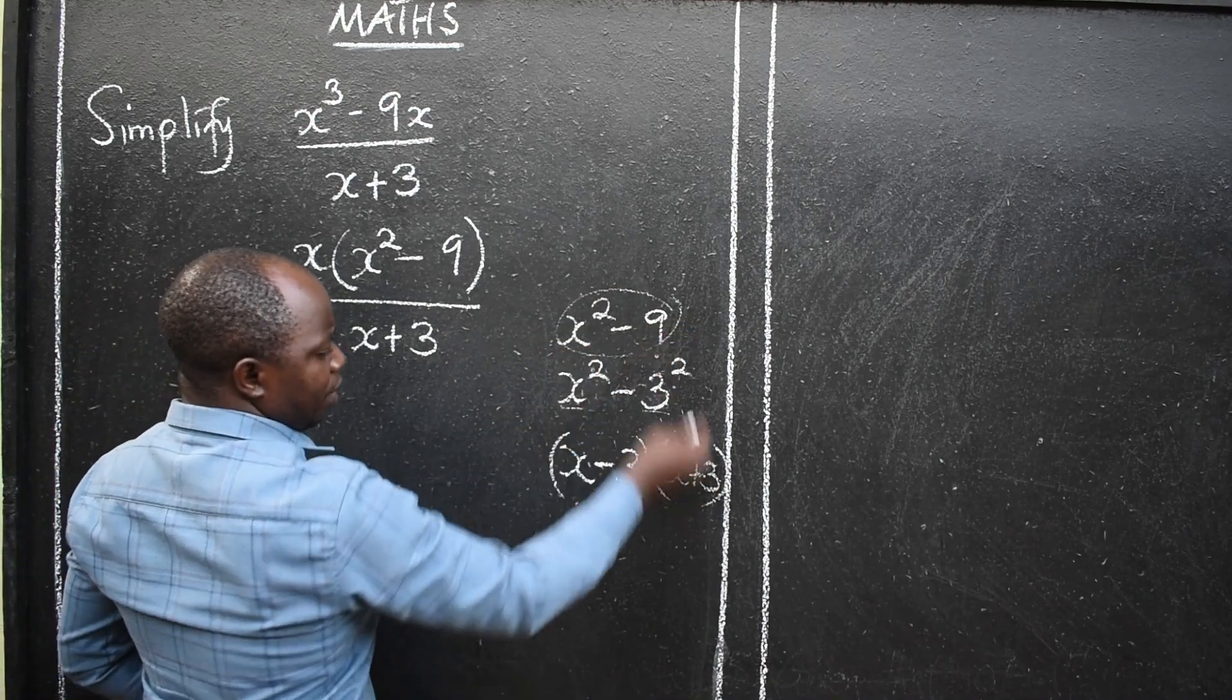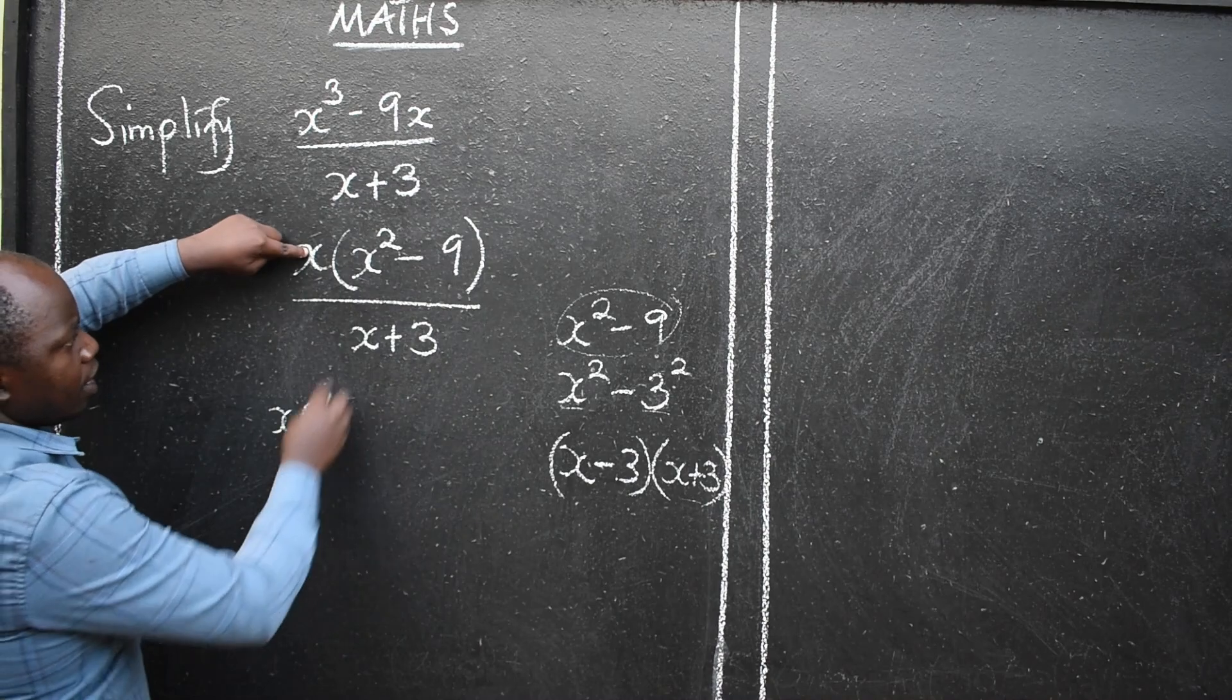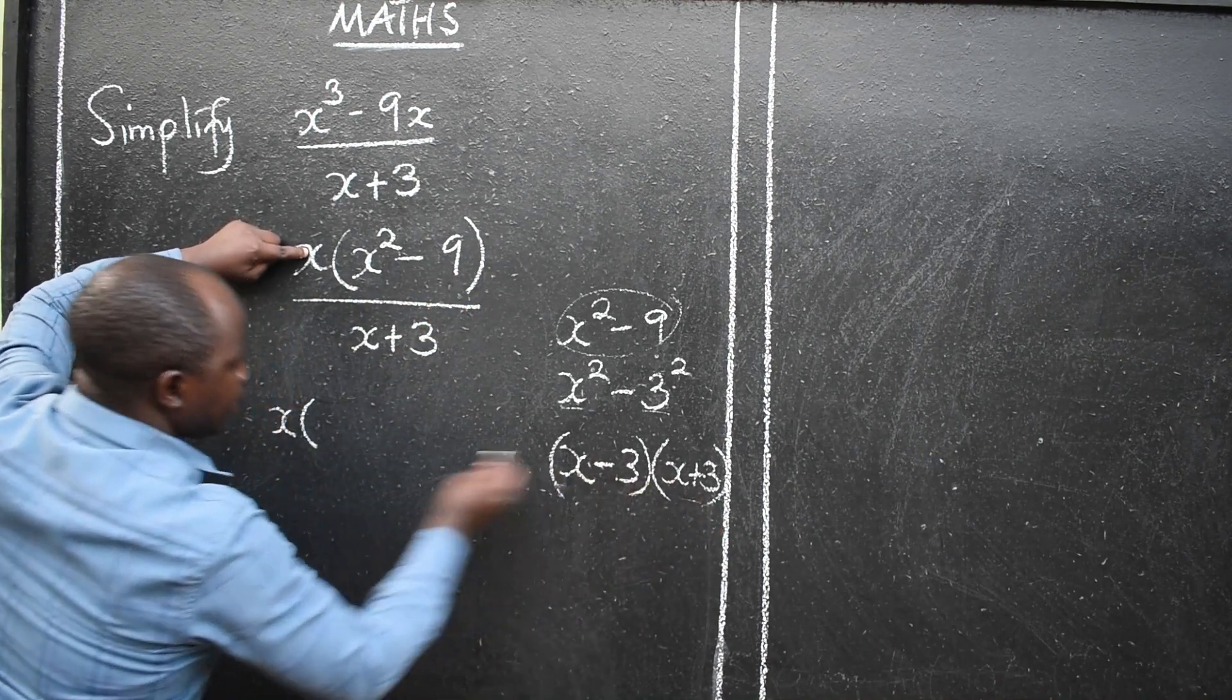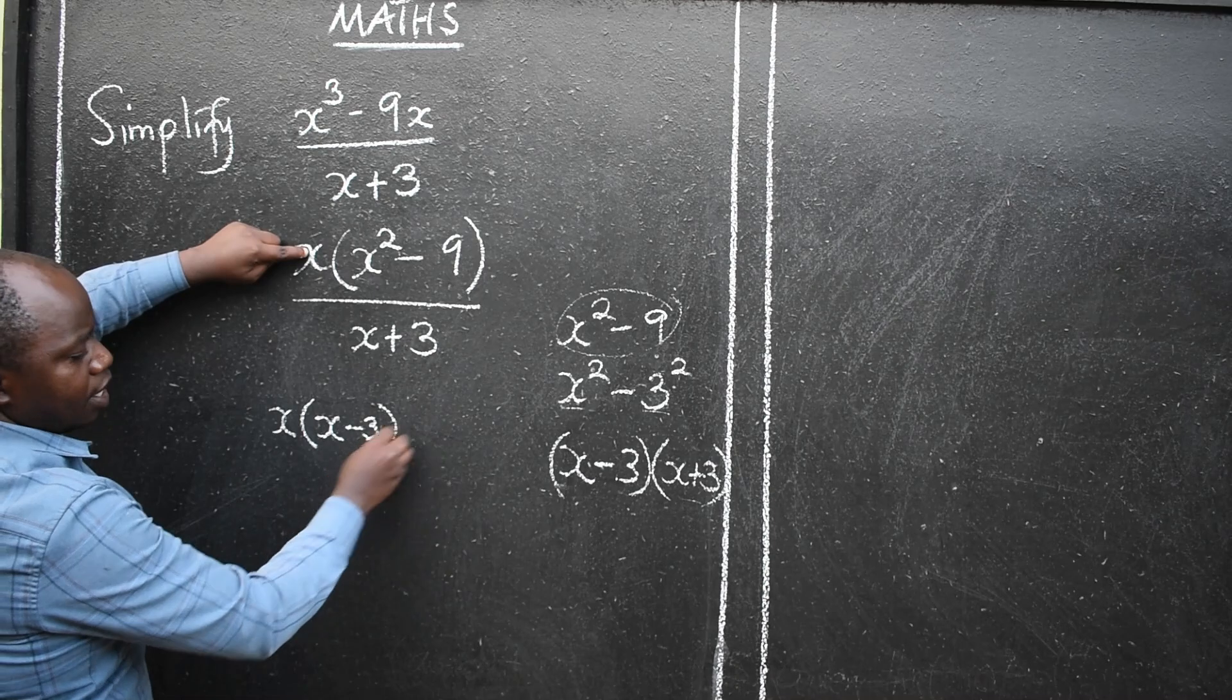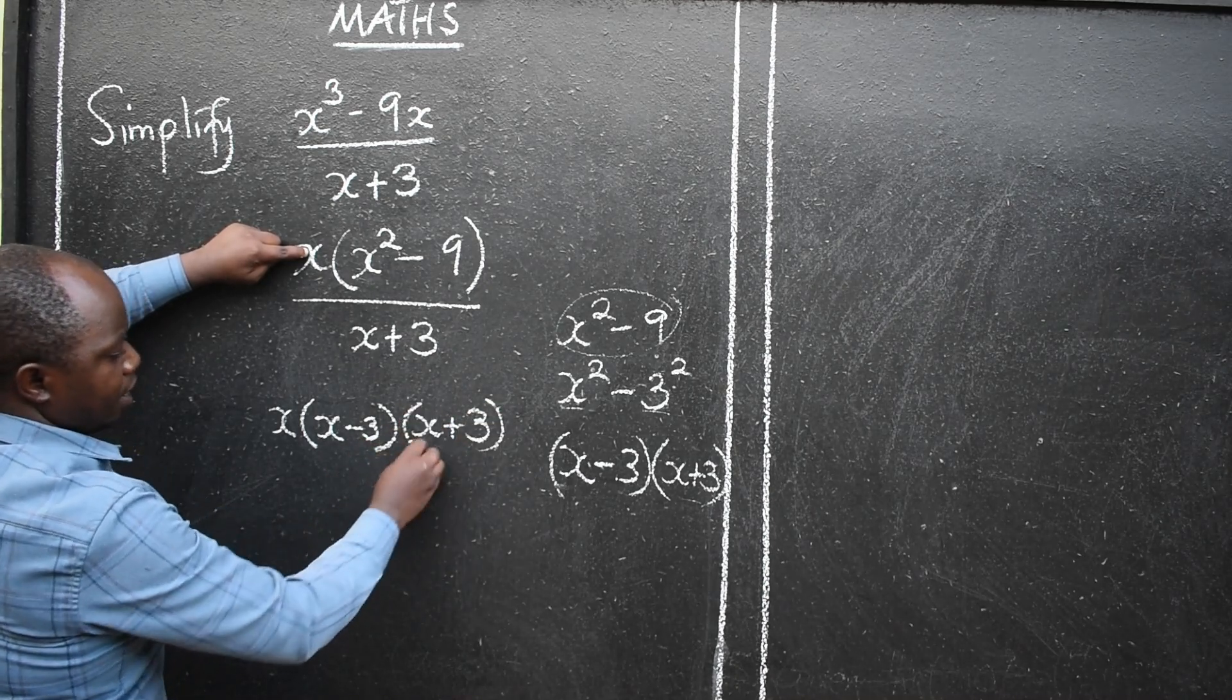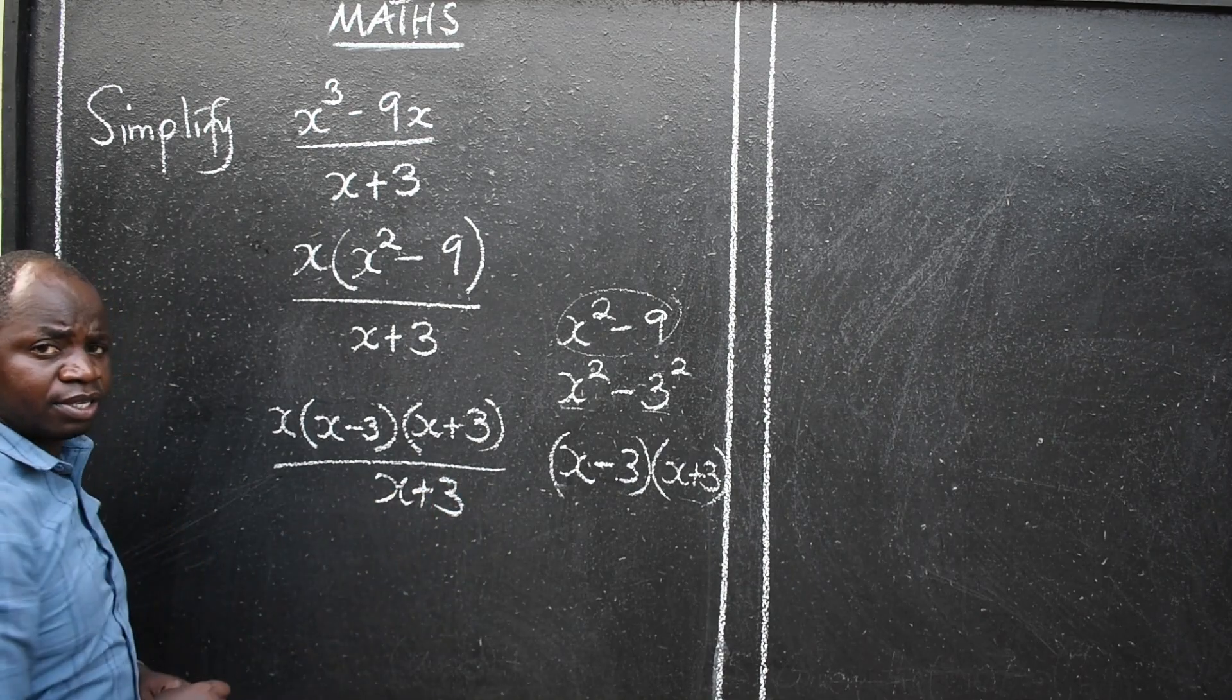So where is this? We are replacing with that. So I have got x here. Here we have this. Then I have got x minus 3. Then the other one, x plus 3. Like this. Divided by x plus 3. You see that?